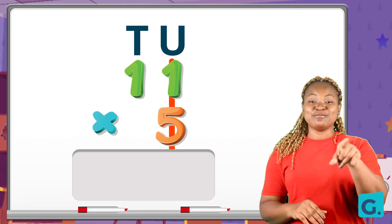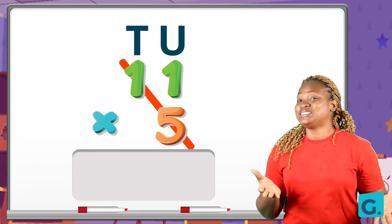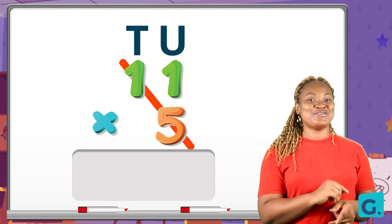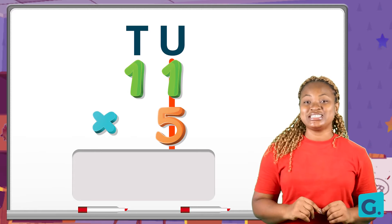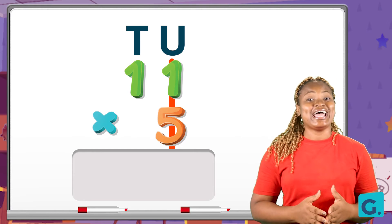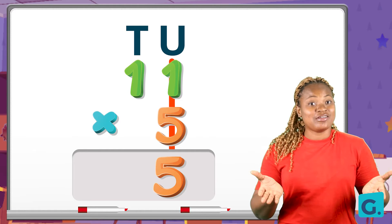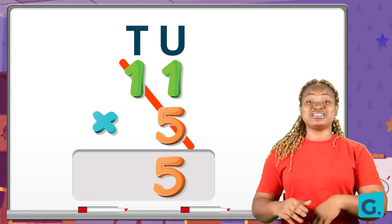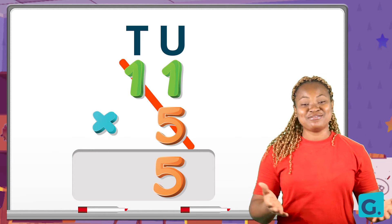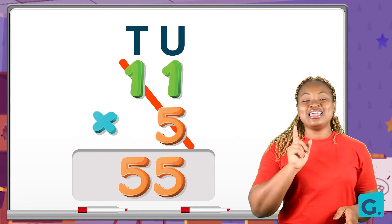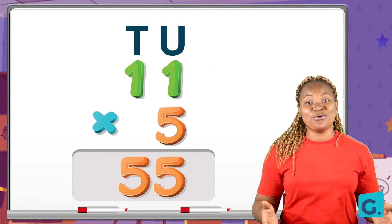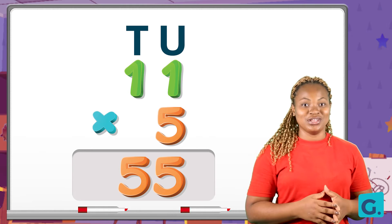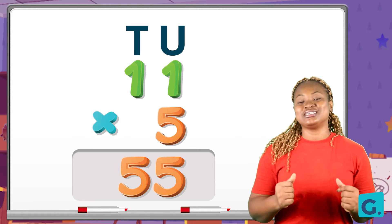Are you ready? Now let us apply that same reading to this problem. Remember: unit times unit, unit times tens — that's how the order goes. So unit times unit, we say five times one, and that gives us five. And then we move to unit times tens, so we say five times one again, and that gives us five. Eleven times five equals fifty-five. Nice one!